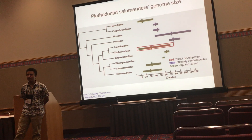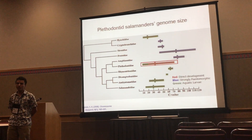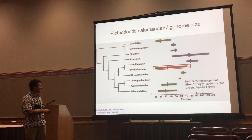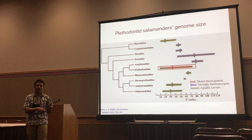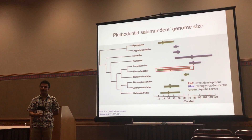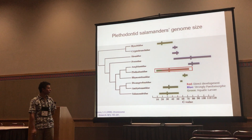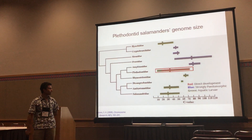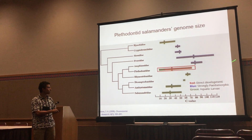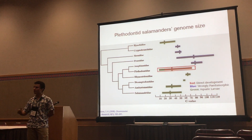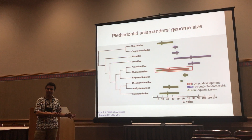Plethodontid salamanders — the plethodontid family is the largest family of salamanders, and it's the one on which we are doing our study. There is a lot of variation in genome sizes. In this graph you can see some of the effects genome size could have on life history: in red we have direct developers, in blue strongly pedomorphic salamanders, and in green aquatic larvae. You can see that some species with the largest genomes are skipping the metamorphosis step.